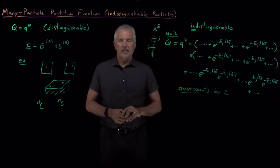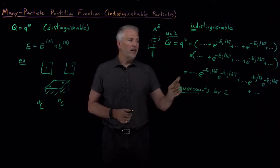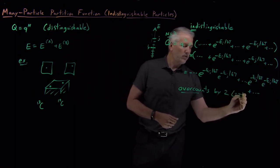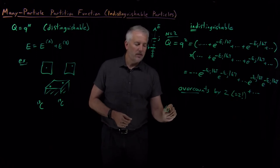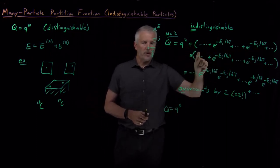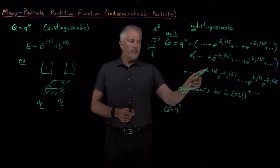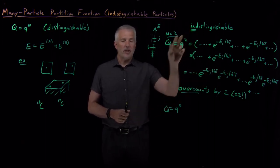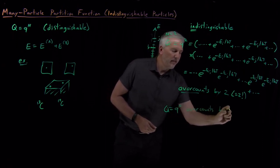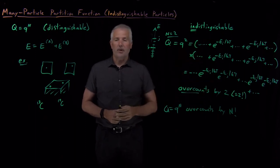We've counted each state exactly twice as often as we should have, because there are two different orders in which we could write these two terms — in other words, 2! permutations of i and j. For the more general case of q^N, there are N! different permutations of each term. If the particles are indistinguishable, we've over-counted by N! — the number of ways of reshuffling those terms that look different algebraically but are in fact exactly the same.